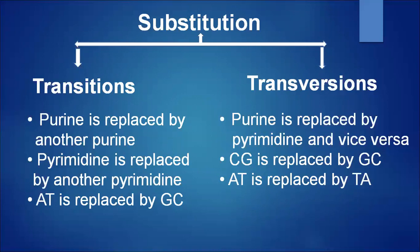In transversions, a purine is replaced by a pyrimidine and vice versa — for example, CG (cytosine-guanine) is replaced by GC (guanine-cytosine), and adenine-thymine is replaced by thymine-adenine. Purines are adenine (A) and guanine (G); pyrimidines are thymine and cytosine.